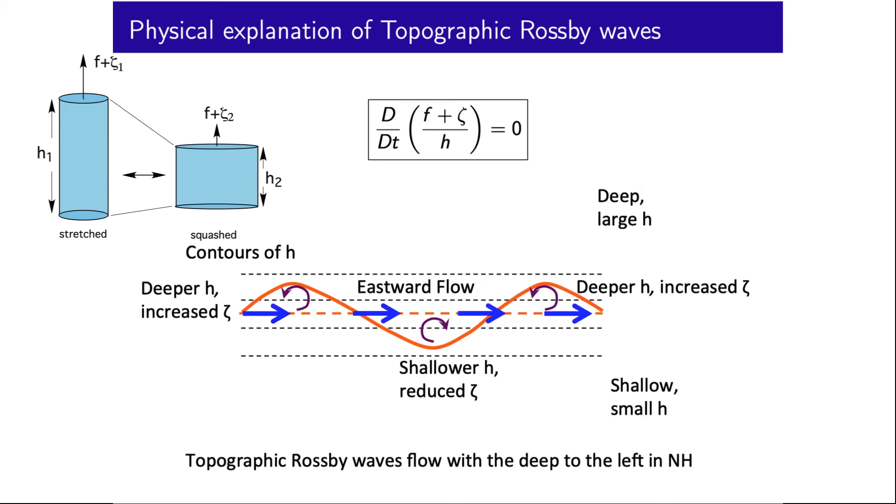Now unlike planetary Rossby waves, topographic Rossby waves can travel in both east and west directions, and have deeper waters on their left in the northern hemisphere and on their right in the southern hemisphere.